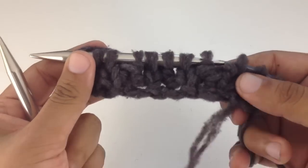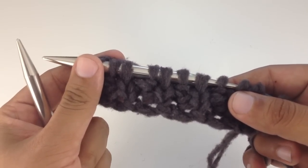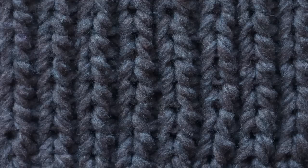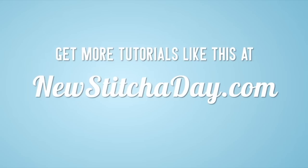Repeat rows two and three until you've reached your desired length. That's how you knit the fisherman's rib stitch. After a few repeats, your pattern should look like this. Want more? Check out our website at newstitchaday.com.